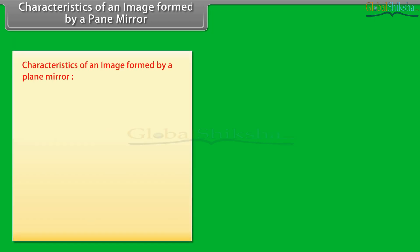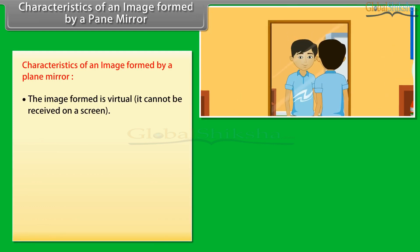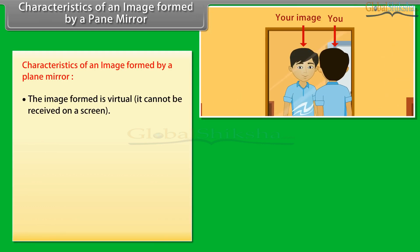Characteristics of an image formed by a plane mirror. The image formed is virtual. It cannot be received on a screen. The image formed is erect. The size of the image is as of the object.